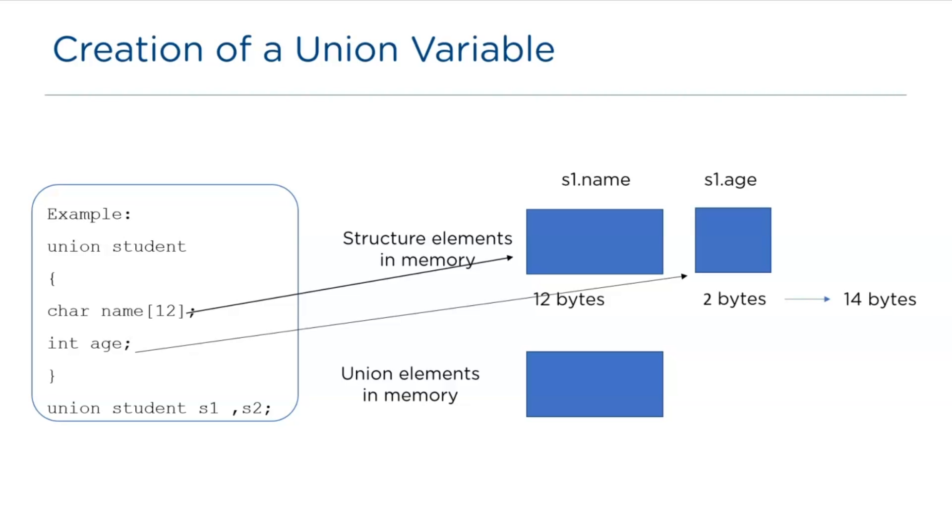In the case of union, the memory for the elements name and age will be allocated at the same location. So, in this example, the highest memory space of an element is considered. That is, the size of an element name is 12 bytes.